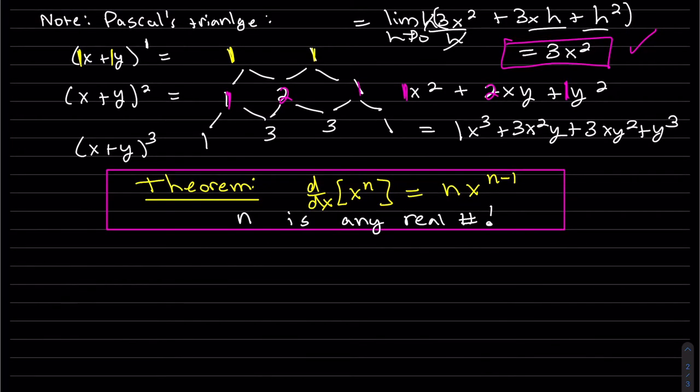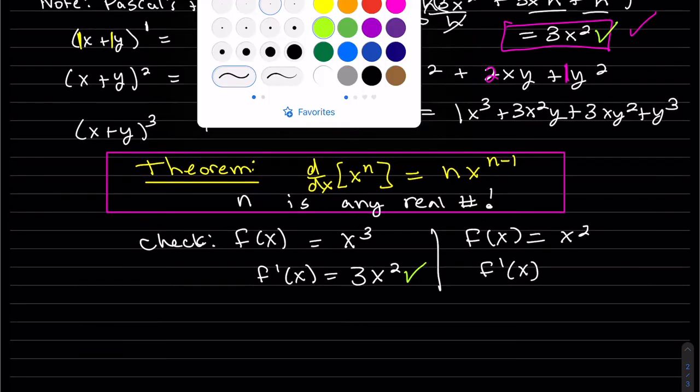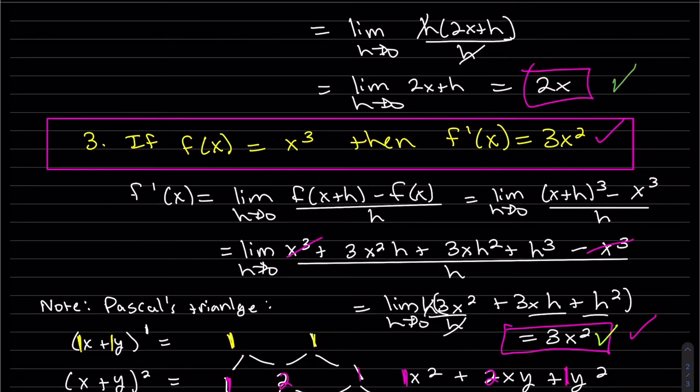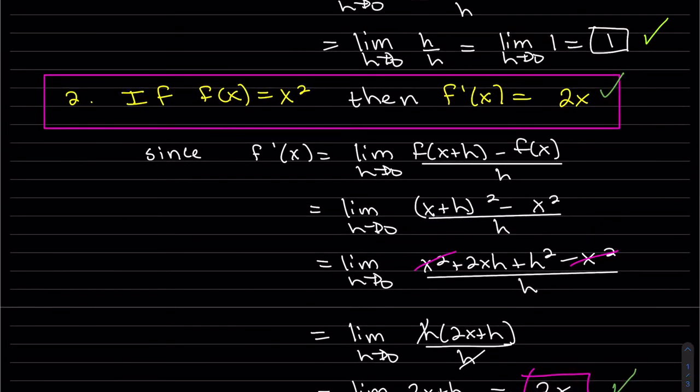This actually works for any real number. So that last one that we just did, 3 comes from the front and then you subtract 1. That's what we just got. This is 2x to the 1 power, 2x. And that's what we got.